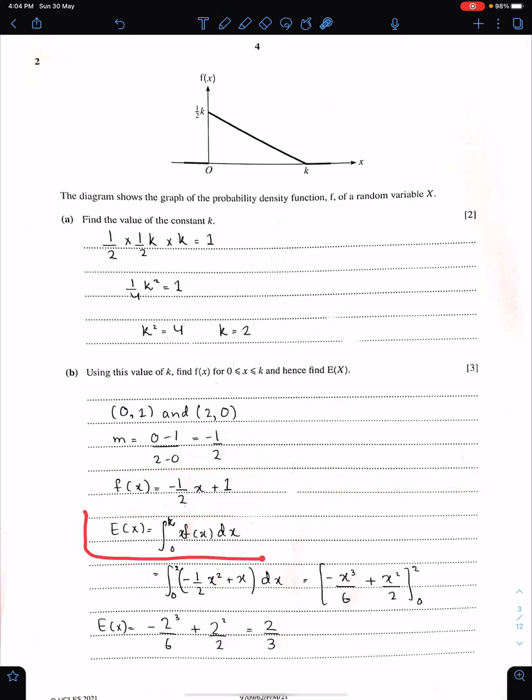This is the formula of mean. With the help of this formula, we can easily get the value of mean. By multiplying X with F of X, we have this equation. By integrating this equation and applying these limits, we can get the value of mean, which is 2 upon 3.